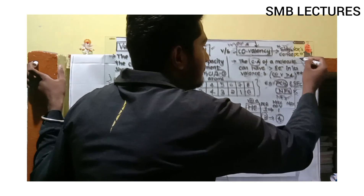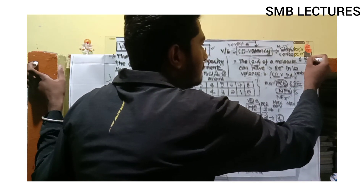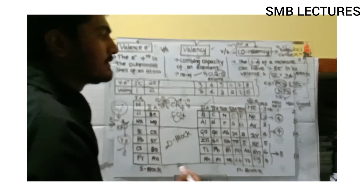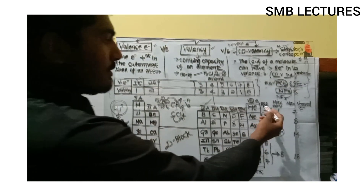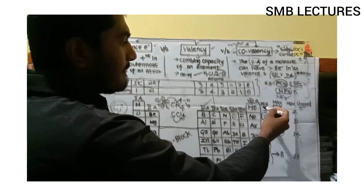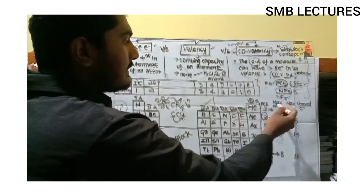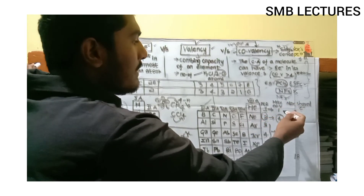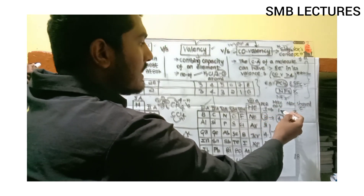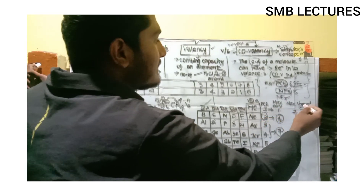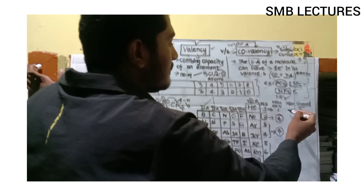NF₃ is possible because three is within the second-period maximum covalency of four. For the first period, the maximum covalency is one and the maximum number of shared electrons is two — you simply double the covalency to get the shared electrons.